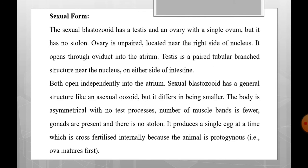The sexual blastozoid has a testis and an ovary with a single ovum, but it has no stolon. The ovary is unpaired — a single ovary located near the right side of the nucleus — and opens through the oviduct into the atrium. The testis is a paired, tubular, branched structure near the nucleus on either side of the intestine. Both open independently into the atrium. The sexual blastozoid has a general structure like an asexual ozoid but differs in being smaller, with an asymmetrical body. It produces a single egg at a time which is cross-fertilized internally, because the animal is protogynous — that is, the ovum matures first.